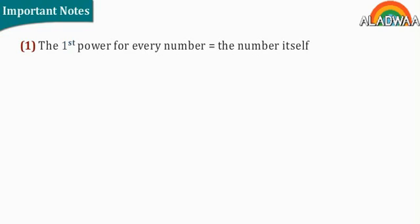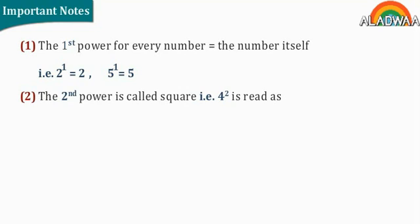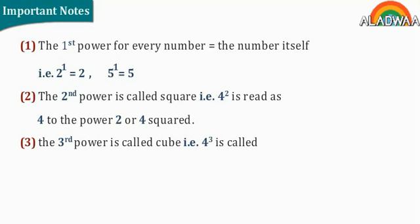Important notes. Number 1: the first power of every number equals the number itself. That's to say, 2 to the power 1 equals 2, and 5 to the power 1 equals 5. Number 2: the second power is called square. That's to say, 4 to the power 2 is read as 4 to the power 2 or 4 squared. Number 3: the third power is called cube. That's to say, 4 to the power 3 is called 4 to the power 3 or 4 cubed.